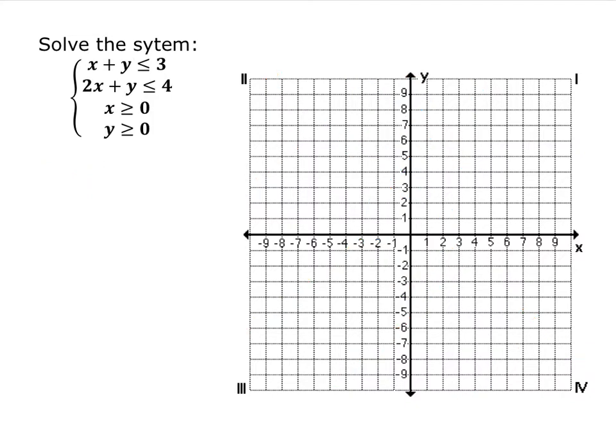You can also have systems that have more inequalities than just 2. So for instance, this one has 4. Sometimes you'll see things like this. X is greater than or equal to 0 and Y is greater than or equal to 0.